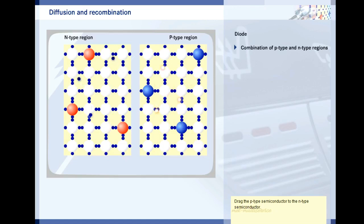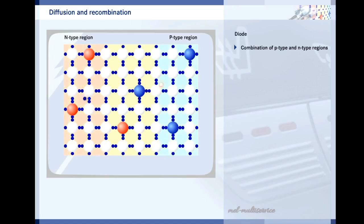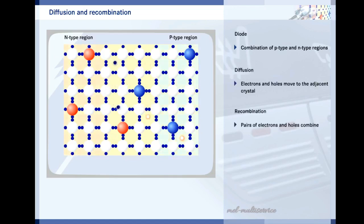Drag the p-type semiconductor to the n-type semiconductor. The free electrons in the n-type region move to the p-type region and fill the holes. The holes in the p-type region move to the n-type region and combine with the electrons. These processes are called diffusion and recombination of electrons and holes.